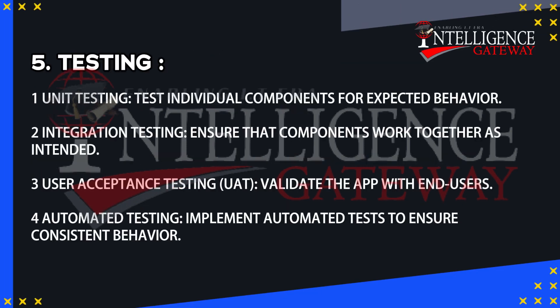The fifth step is Testing. This includes unit testing to test individual components for expected behavior, integration testing to ensure components work together as intended, user acceptance testing (UAT) to validate the app with end users, and automated testing to ensure consistent behavior.